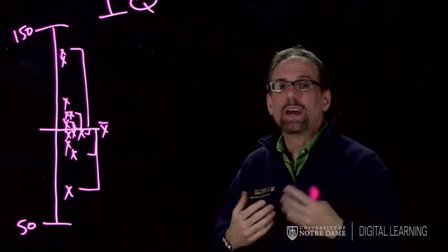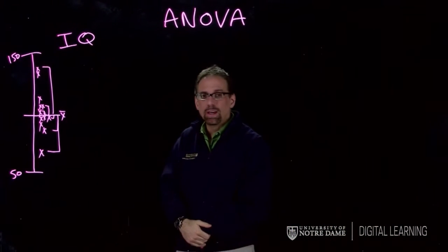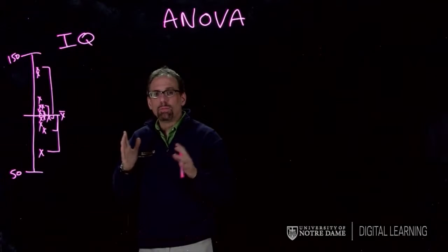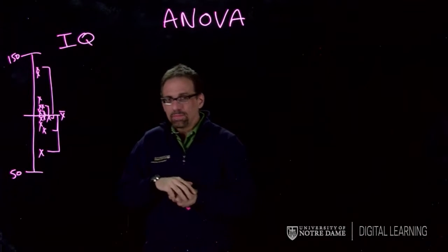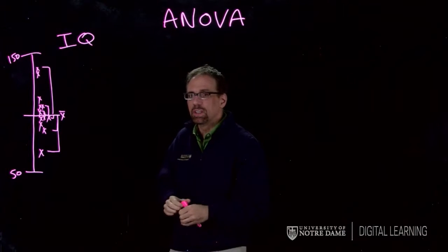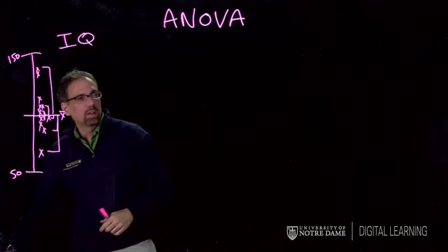With ANOVA, though, it's got to be the thing that's explaining the difference has to be something that's categorical. Now, I'm going to talk about linear model, as we call it, in a bit more general terms before I really turn to ANOVA specifically, just to help you understand this idea of variance and what we're trying to do with it.